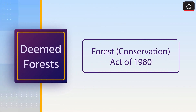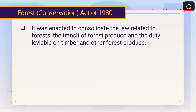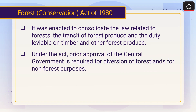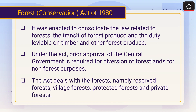Now let's discuss the Forest Conservation Act of 1980. It was enacted to consolidate the law related to forests, the transit of forest produce, and the duty leviable on timber and other forest produce. Under the act, prior approval of the central government is required for diversion of forest lands for non-forest purposes. The act deals with forests namely: reserved forest, village forest, protected forest, and private forest.